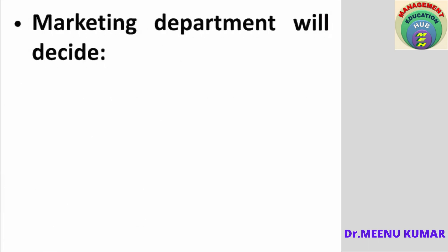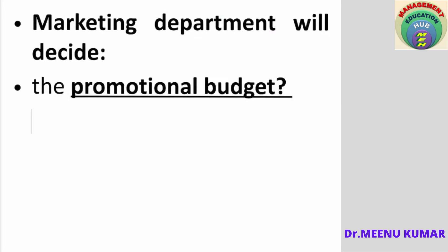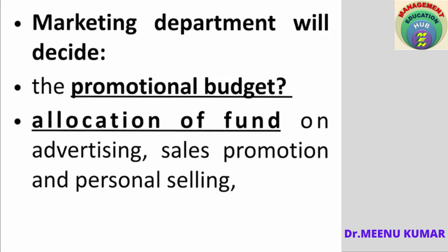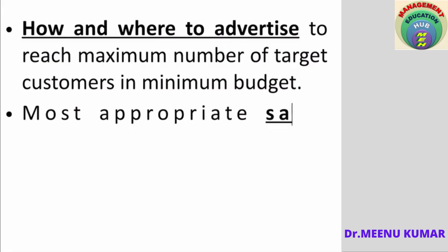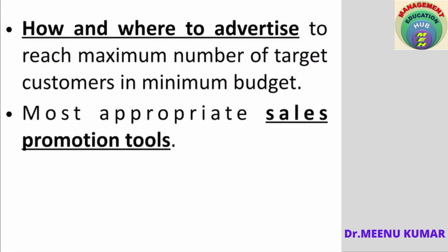The role of marketing in promotion includes: first, deciding the budget — how much money should be spent on promoting the product or services. Next, allocation of funds on different tools like advertising, sales promotion, and personal selling. Third, deciding how and where to advertise to reach the maximum number of target customers within a minimum budget. Selecting the right channel is very important — there are numerous media like newspapers, magazines, radio, television, and social media — and within each medium, the specific channel or publication must also be chosen.